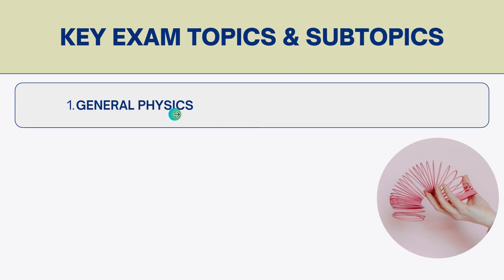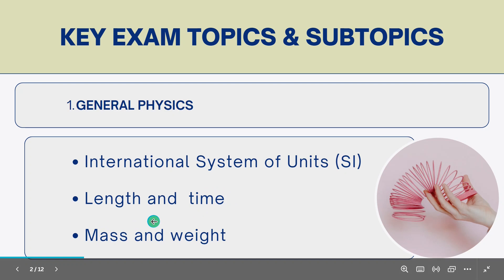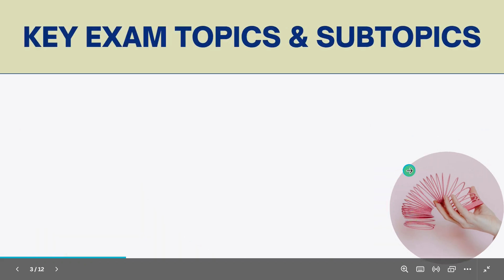The first key exam topic is General Physics. Under General Physics, you need to look at: the international system of units; length and time — including measurement of length using instruments like the micrometer screw gauge, vernier caliper, and meter rule; the pendulum, how to calculate the period and the number of oscillations; mass and weight; and volume — how weight is measured, how mass is measured, and how each is calculated.